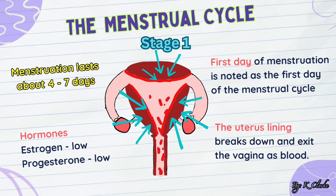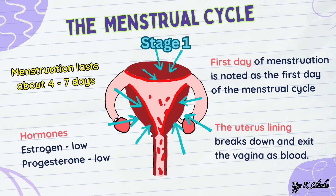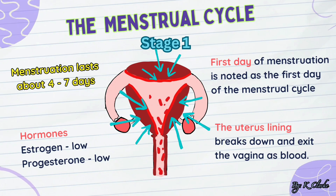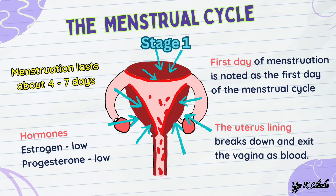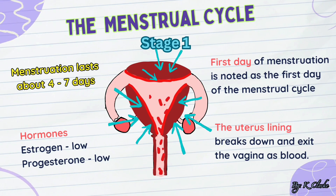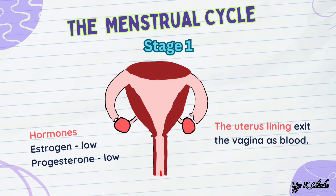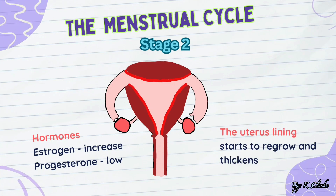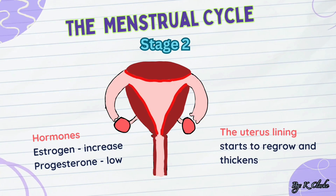Menstruation is due to low levels of the hormones estrogen and progesterone, which are produced by the ovary. During menstruation, females often feel cramps and have mood swings as the uterus lining breaks down and exits through the vagina.